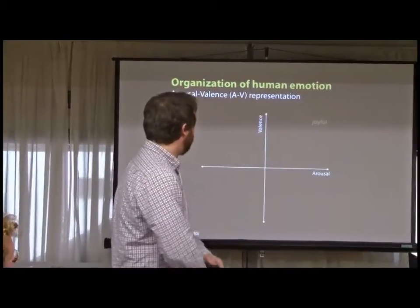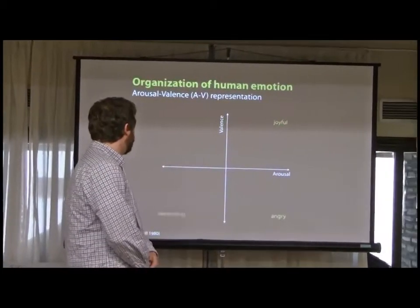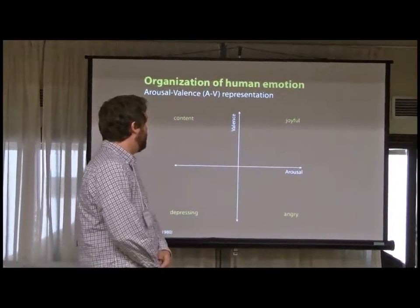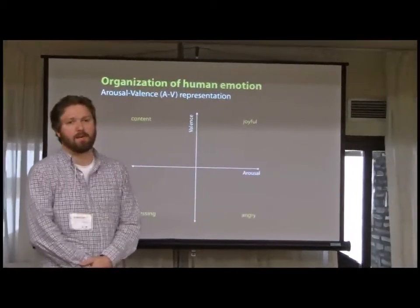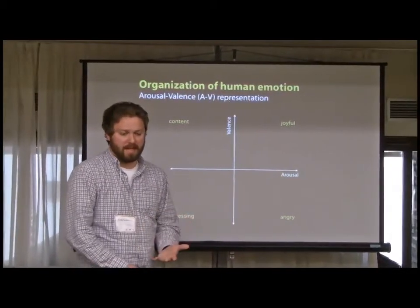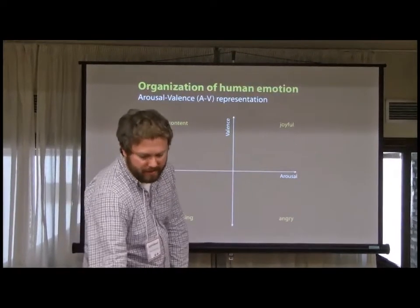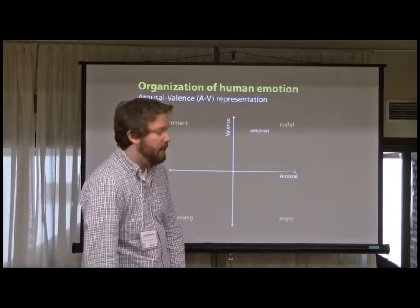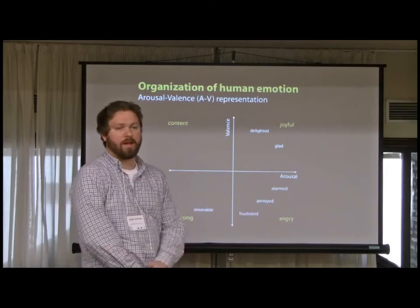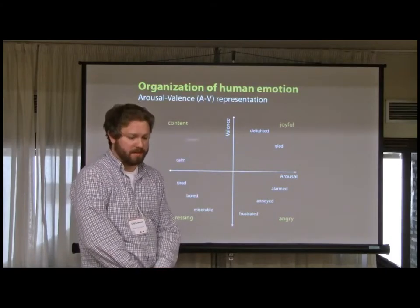If I just plot a few terms in the four corners: starting top right, high valence, high arousal, we have joyful; down to angry; over to depressing; and up to content. And of course we have a whole gradient of emotions that we can represent in this space.